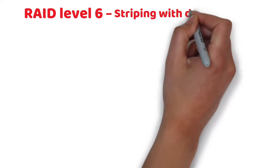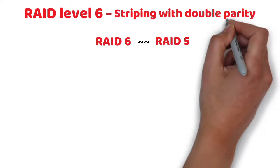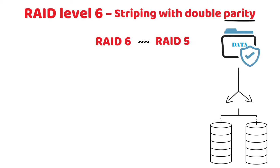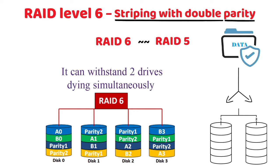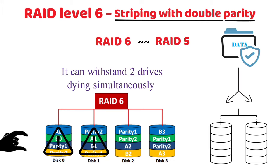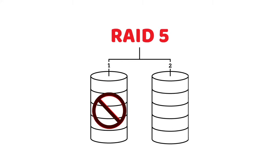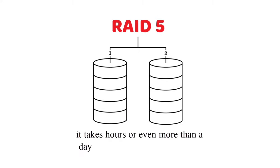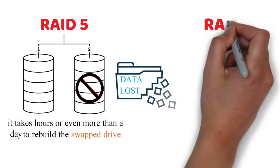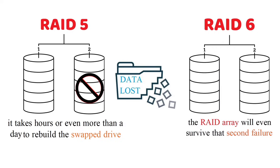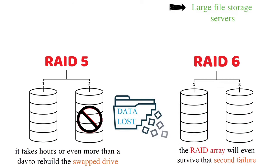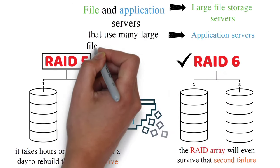RAID Level 6 — Striping with Double Parity. RAID 6 is like RAID 5, but the parity data is written to two drives — striping with double parity. That means it requires at least four drives and can withstand two drives dying simultaneously. If a drive in a RAID 5 system dies and is replaced, it can take hours or more than a day to rebuild the swapped drive. If another drive dies during that time, you still lose all your data. With RAID 6, the array will survive that second failure. RAID 6 is ideal for large file storage servers and application servers, and is preferable over RAID 5 in file and application servers that use many large files.